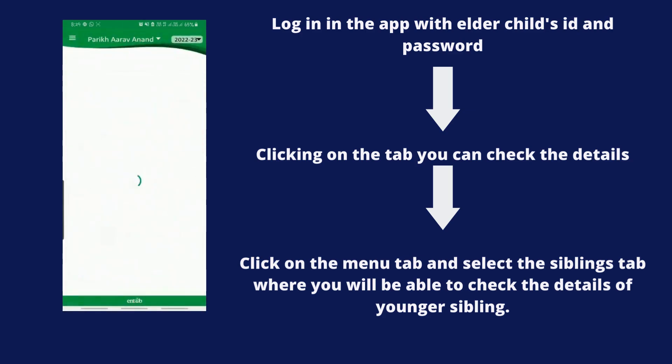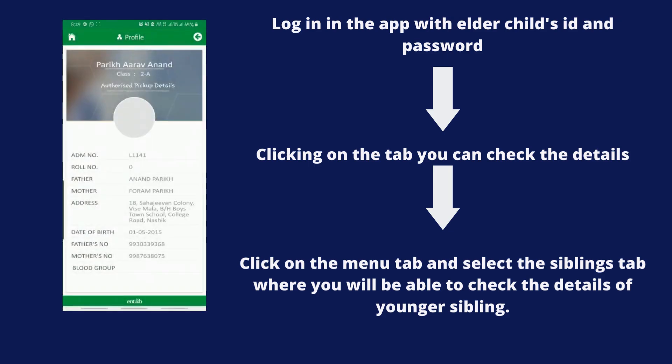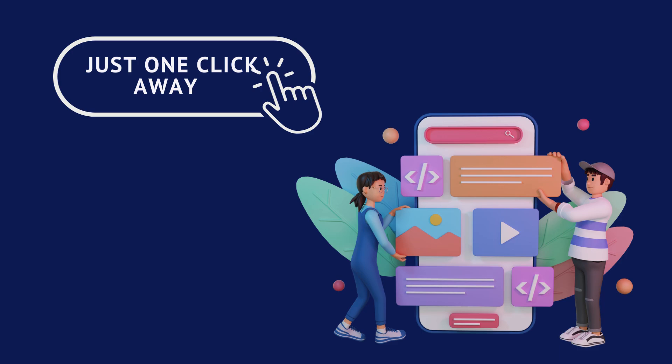To check details for siblings, log in to the app with the elder child's ID and password. Click on the menu tab and select the Siblings tab, where you will be able to check the details of the younger sibling. A kind request to all parents to download the Campus Care app.